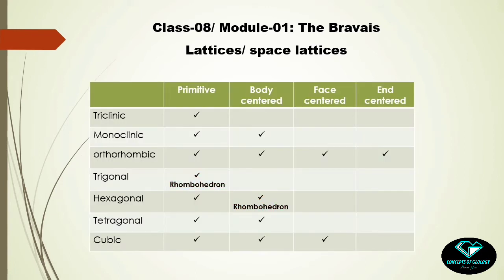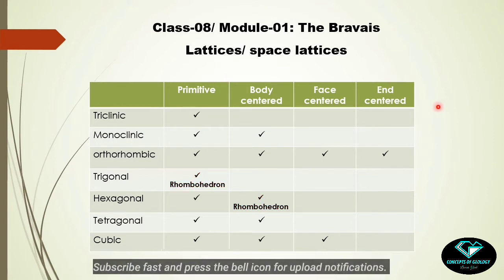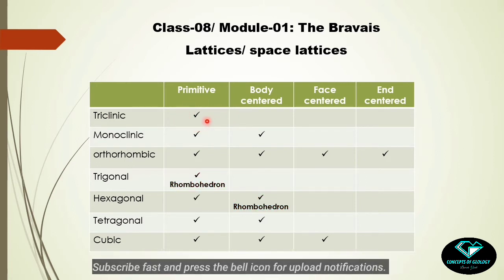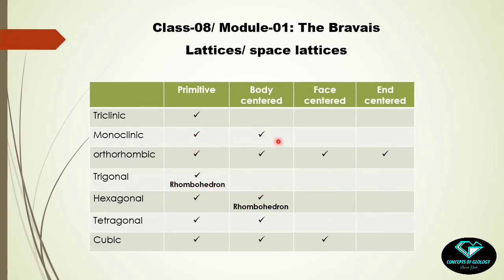Let's look at the table showing which crystal system allows which type of arrangement. The triclinic system permits only one type: primitive. The monoclinic system has primitive and body-centered. The orthorhombic system may have all four variants. Interestingly, in the trigonal system we may have a primitive unit cell — the rhombohedron, which is an inclined cube.